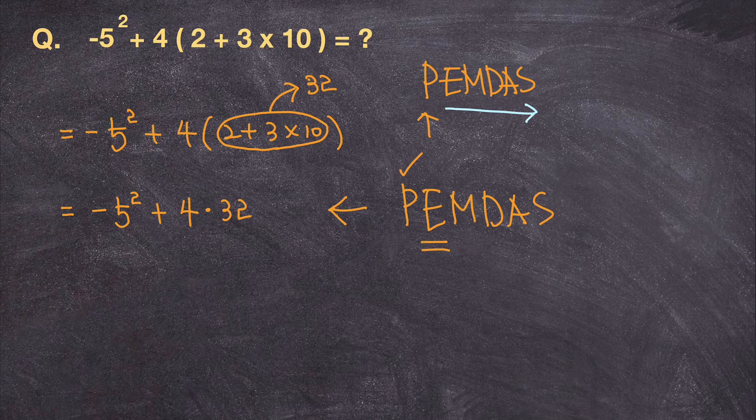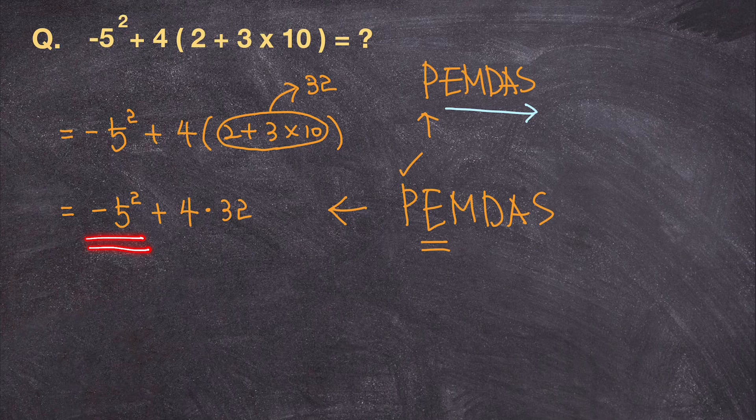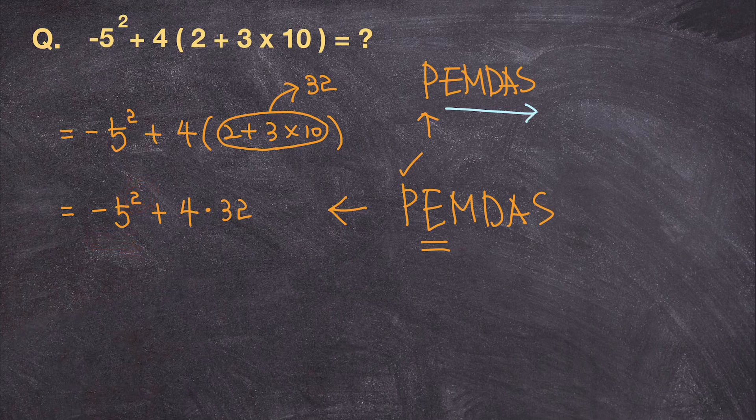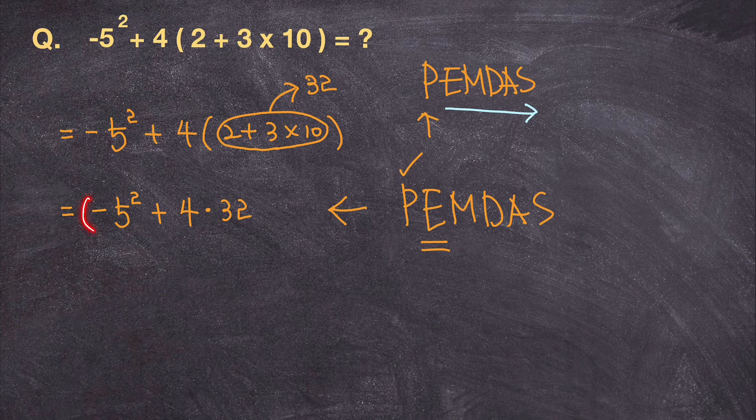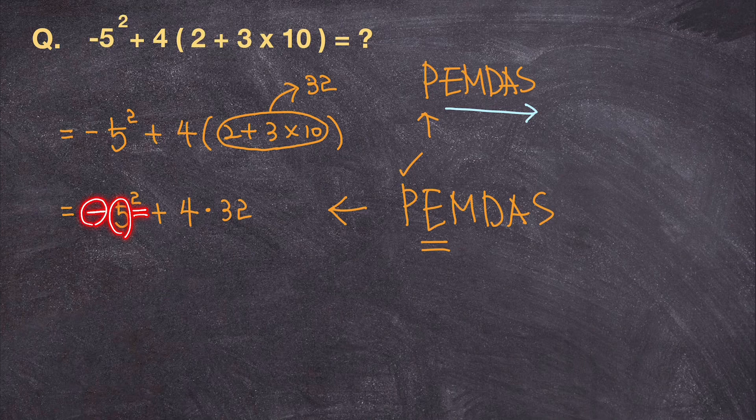And if you take a look at this, what I see a lot of students do is they square negative 5 and end up with positive 25. And that's a big no-no because there is no parenthesis that wraps around negative 5 there. What you have here is 5 squared and then there is a negative sign attached to 5 squared.